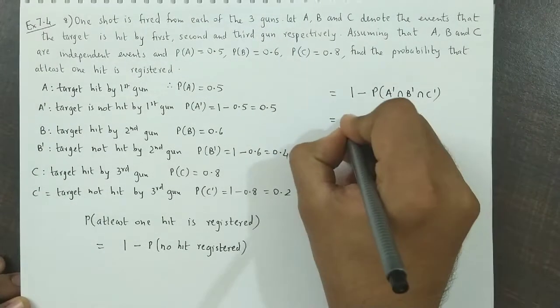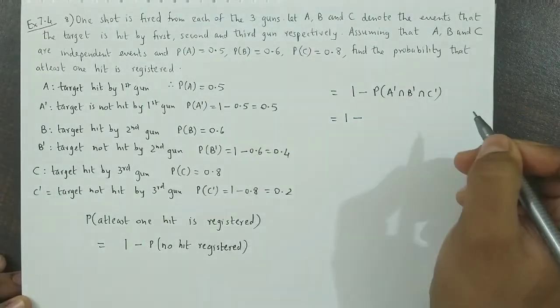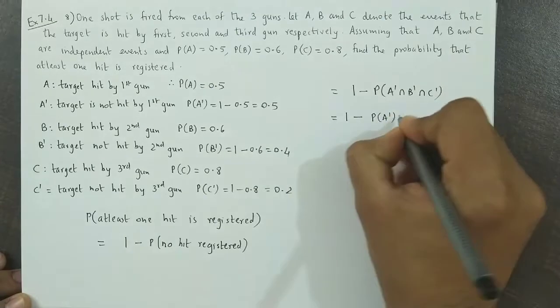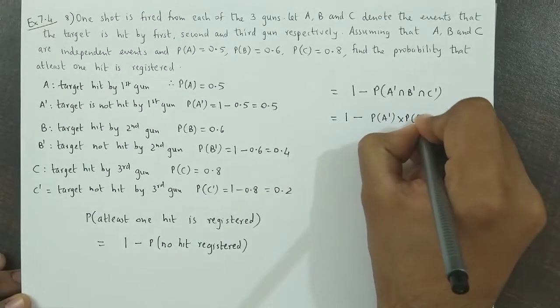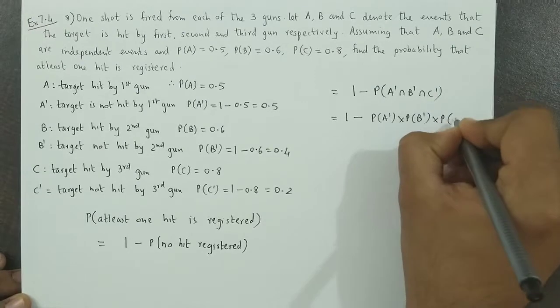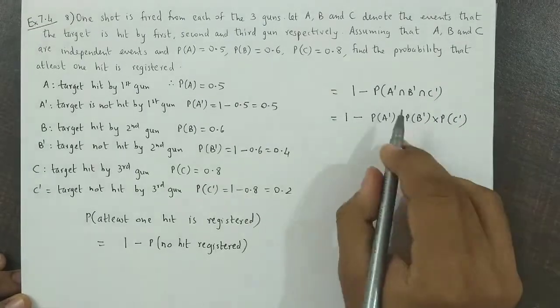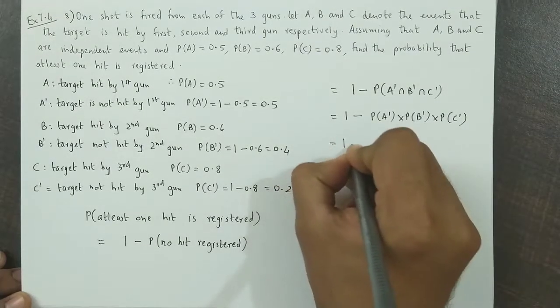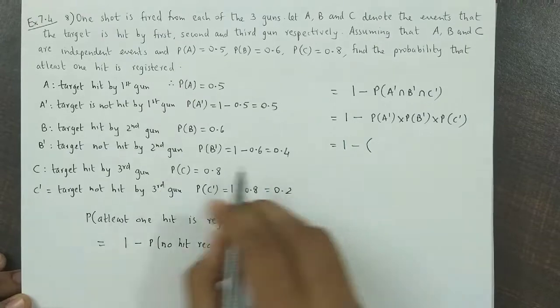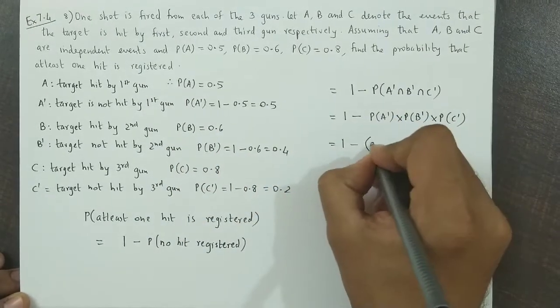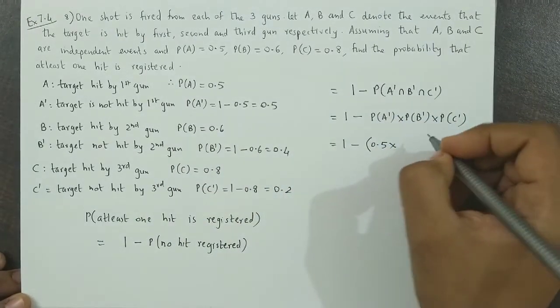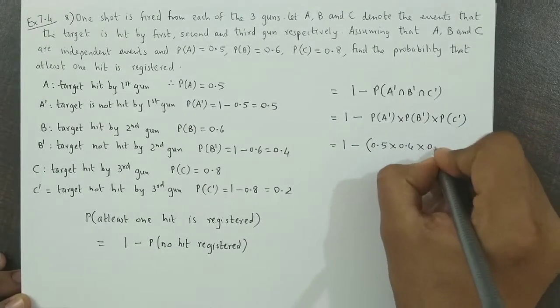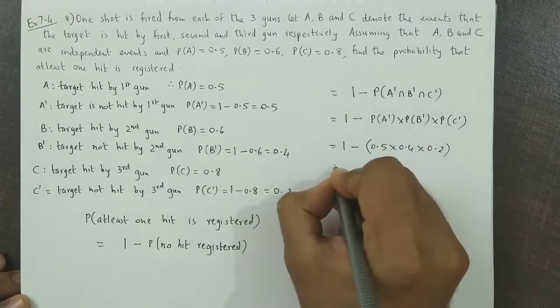As they are independent events, we use the multiplication theorem for independent events. So this would be 1 minus P(A complement) times P(B complement) times P(C complement). Intersection becomes multiplication in case of independent events. The probabilities we calculated are: A complement is 0.5, B complement is 0.4, and C complement is 0.2.